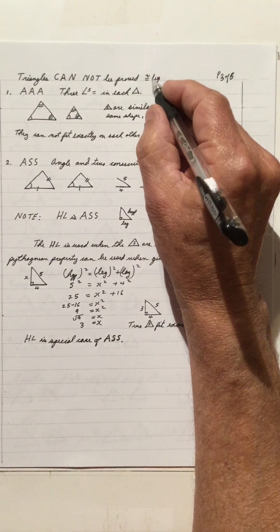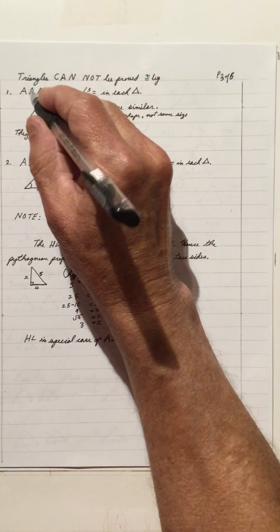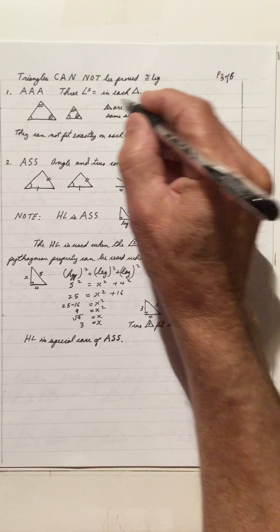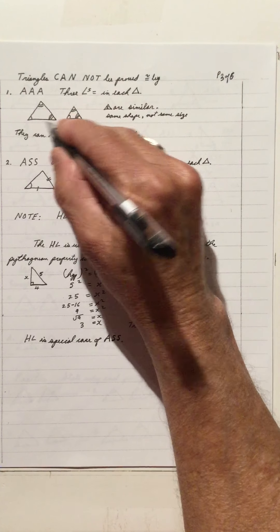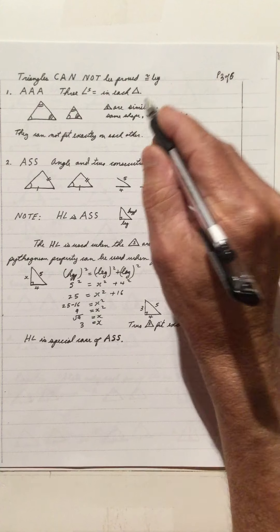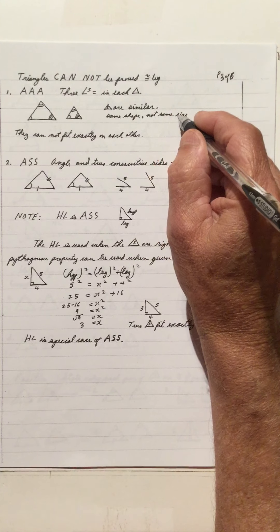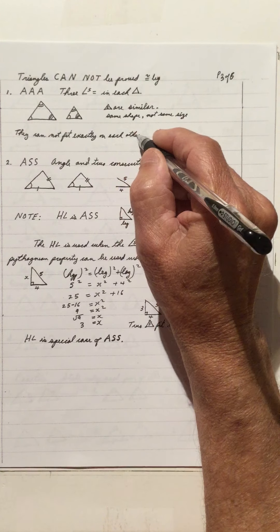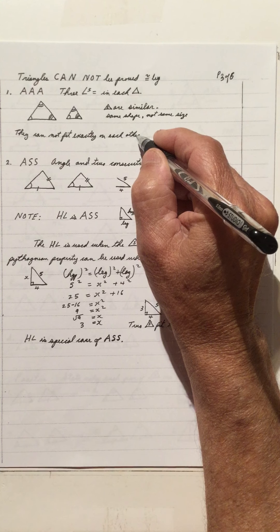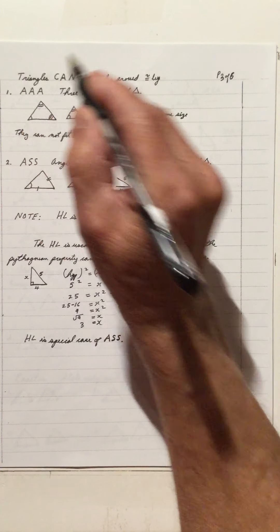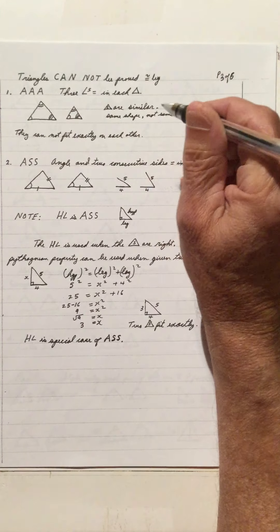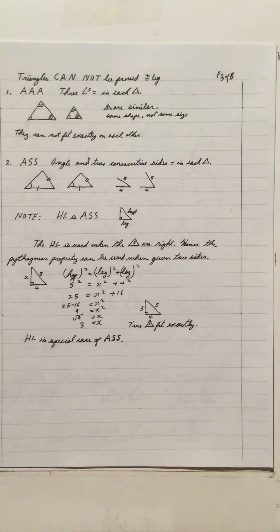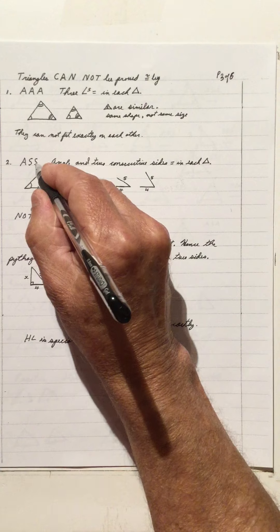Triangles cannot be proved congruent by AAA. Three equal angles make the triangle similar — same shape but not the same size; they cannot fit exactly on each other. So AAA cannot prove triangles congruent, only that triangles are similar. Another invalid method is ASS.